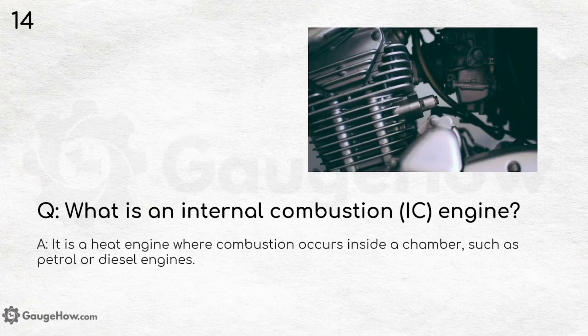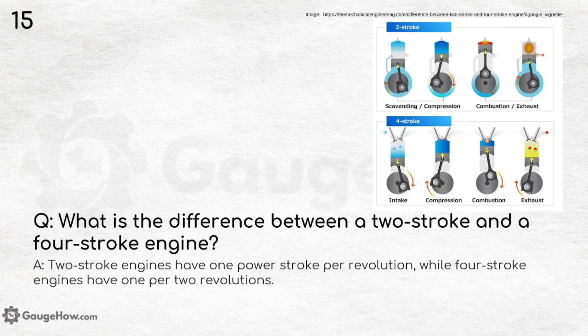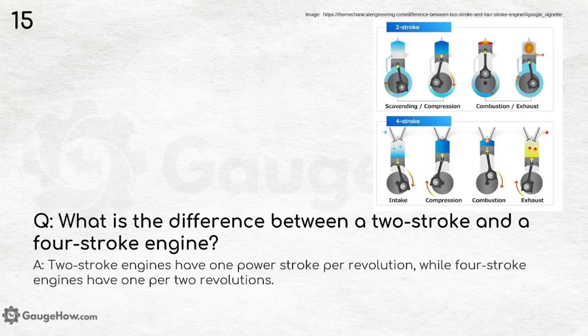What is an internal combustion (IC) engine? It is a heat engine where combustion occurs inside a chamber, such as in petrol or diesel engines — IC engines are the heart of mechanical engineering. What is the difference between a two-stroke and a four-stroke engine? Two-stroke engines have one power stroke per revolution, while four-stroke engines have one power stroke per two revolutions.